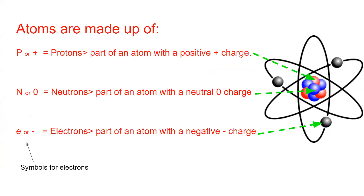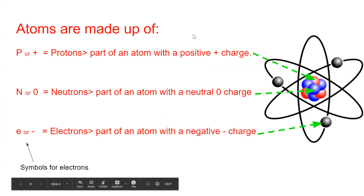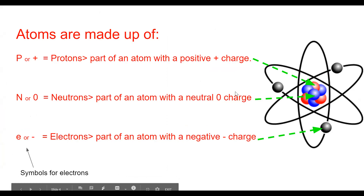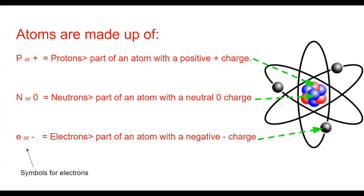Atoms are just the smallest part of matter that has the same properties — the smallest part of gold. Atoms themselves are made of particles. There are three kinds we will talk about, and later in higher science we'll learn these particles are made of yet smaller particles — we're not getting into muons and leptons right now. Atoms are made up of protons, neutrons, and electrons.